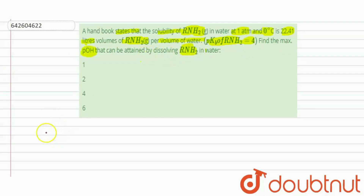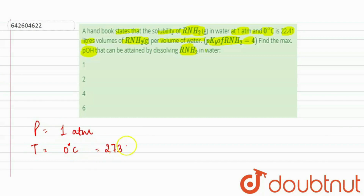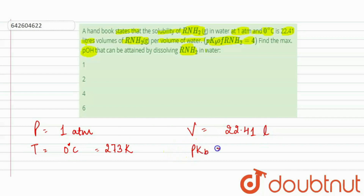Find the maximum POH that can be attained by dissolving RNH₂ in water. What's given in the question? First, pressure is 1 atm, temperature is 0 degree Celsius, which we write as 273 Kelvin, and the volume is 22.41 liters. The PKB value is equal to 4.